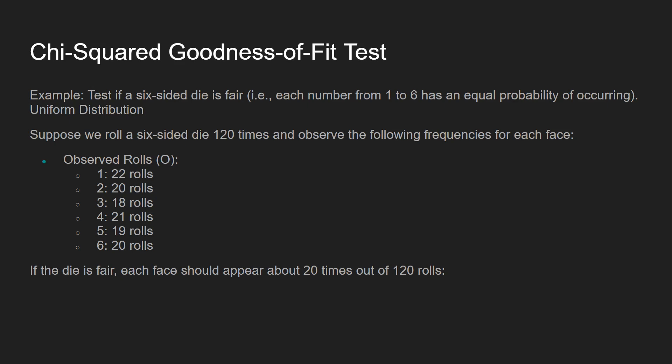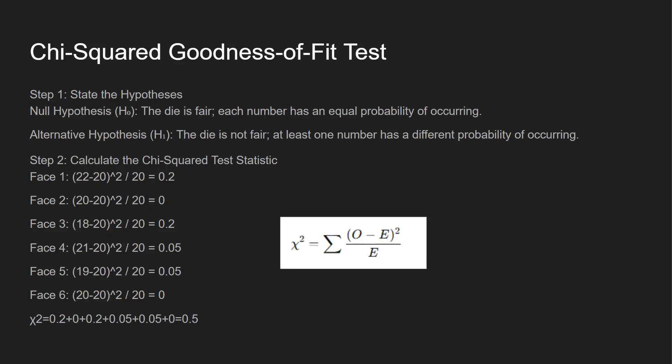If the die is fair, each face should appear about 20 times. Step one: state the hypothesis. The null hypothesis is the die is fair — each number has an equal probability of occurring. The alternative: the die is not fair — at least one number has a different probability of occurring. Step two: calculate the chi-squared test statistic using the formula: sum of (observed minus expected) squared divided by expected. After calculating for each of the six faces, the chi-squared statistic is 0.5.